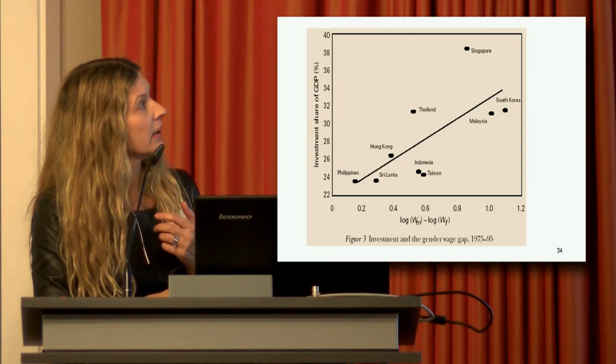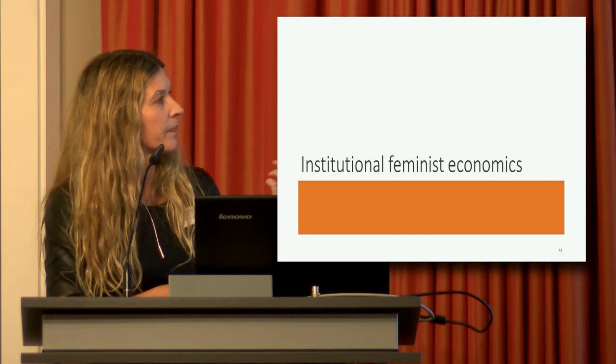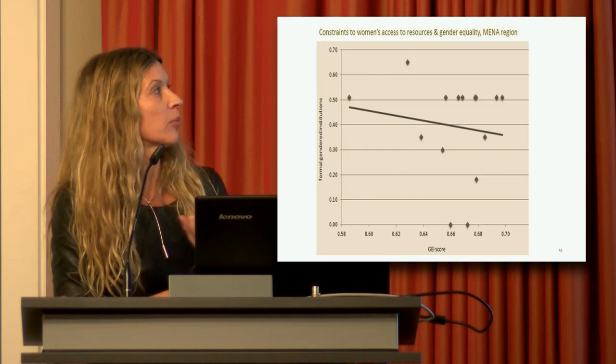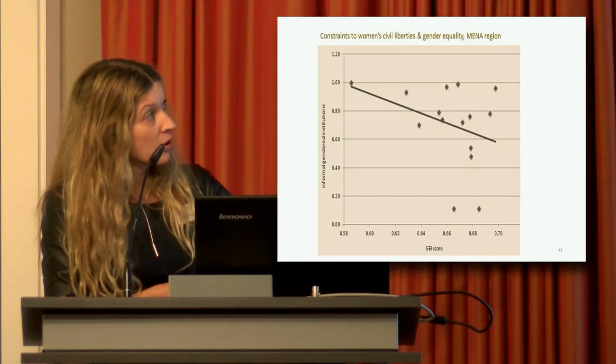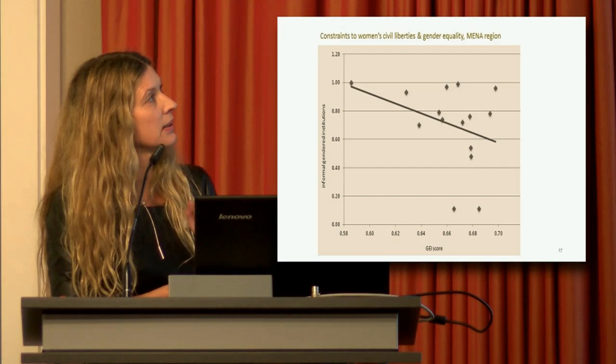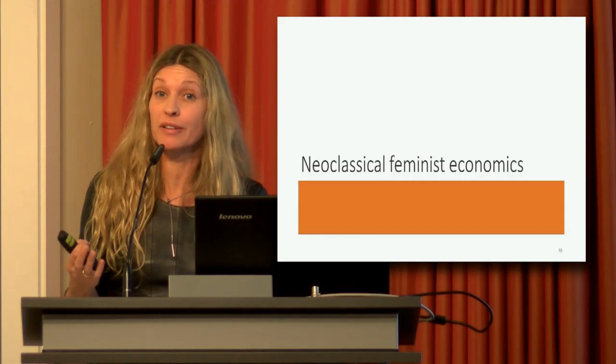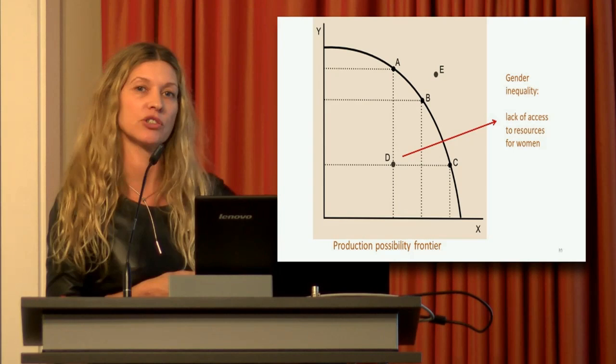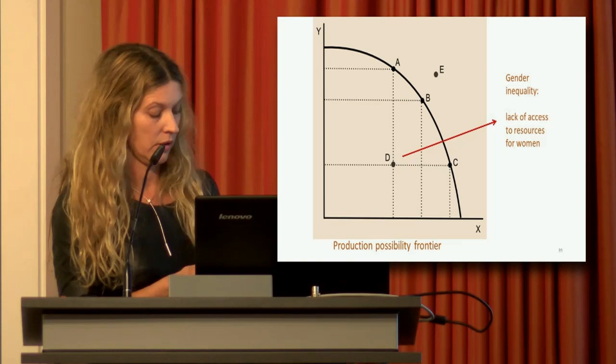Two institutions for MENA region countries show a negative relationship between gender equality score and formal institutions like inheritance law, and informal institutions like civil liberties, found in the OECD's CIGI database. My method is pluralism, not only limited to heterodox economics — you can use a production possibility frontier to show that gender inequality keeps a country producing below the frontier because of lack of access for women to land, credit, or the labor market.